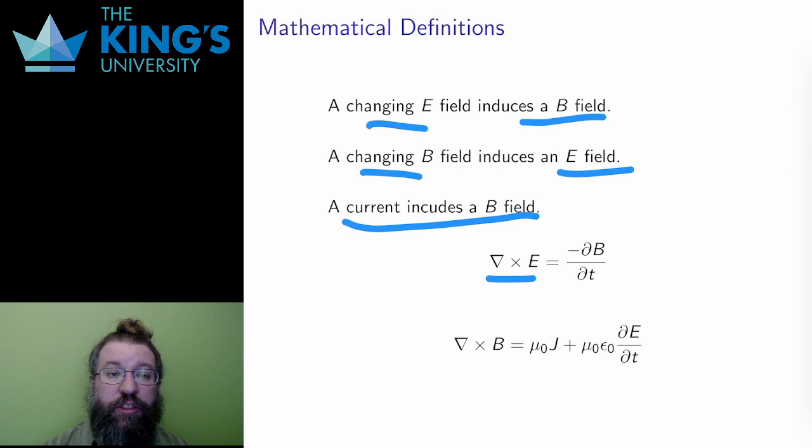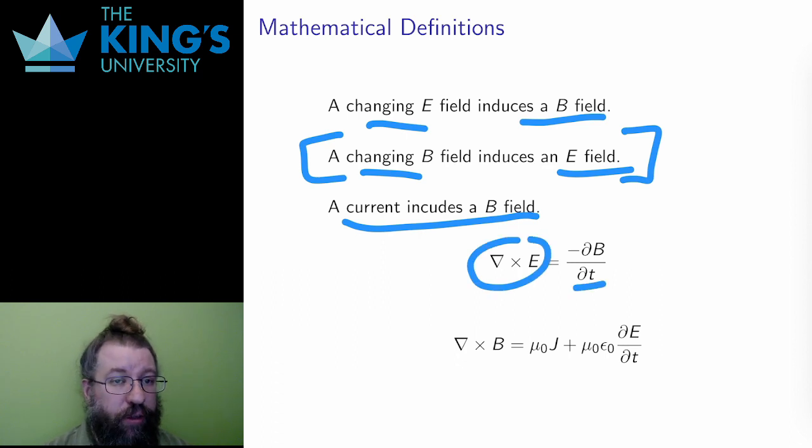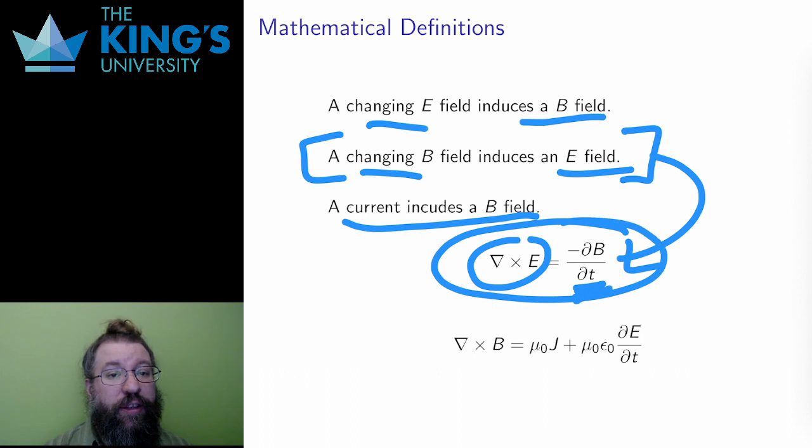Well, what is the induced field? The induced field due to a changing field satisfies the differential equation again, this time using the cross product. The induced electric field due to a changing magnetic field satisfies ∇×E = -∂B/∂t. Notice we have a time derivative here. If the field is not changing, then nothing is induced.